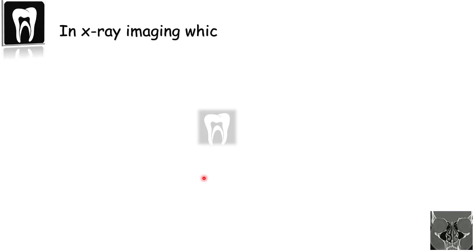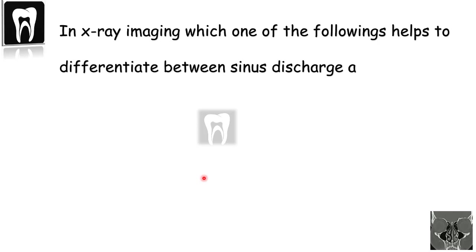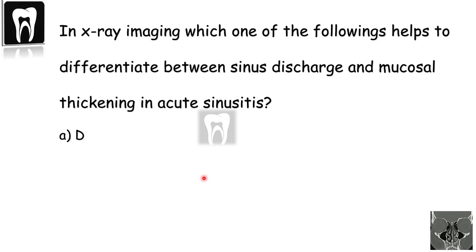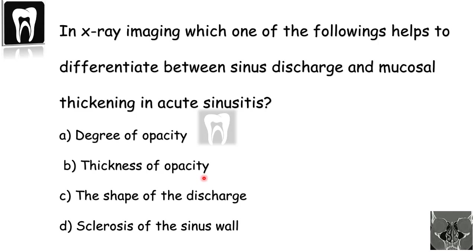Question number 3: In x-ray imaging, which one of the following helps to differentiate between sinus discharge and mucosal thickening in acute sinusitis? A: Degree of opacity. B: Thickness of the opacity. C: The shape of the discharge. D: Sclerosis of the sinus wall.